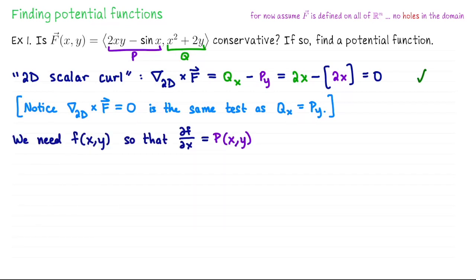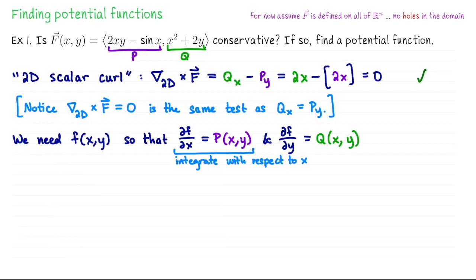So it makes sense to go looking for a potential function, little f of x, whose x partial derivative is 2xy minus sin x, and whose y partial derivative is x squared plus 2y. Here's the algorithm I use to find this potential function. What I'm going to do is take the first relationship — df/dx equals the first component function — and integrate both sides with respect to x.